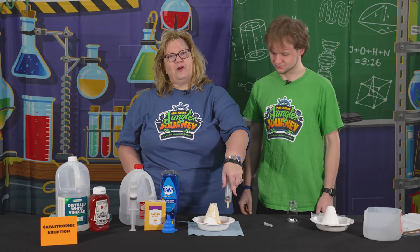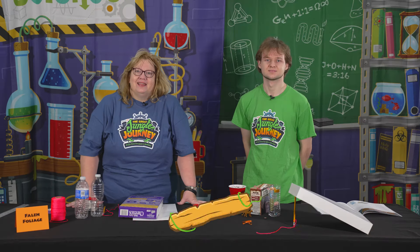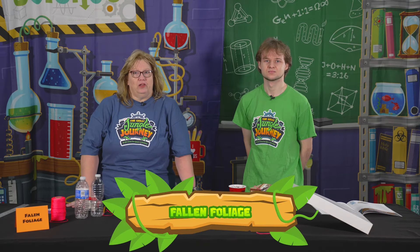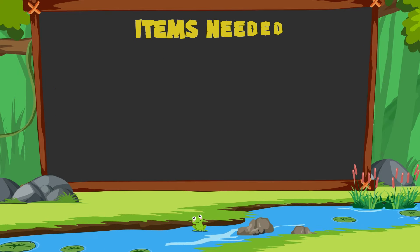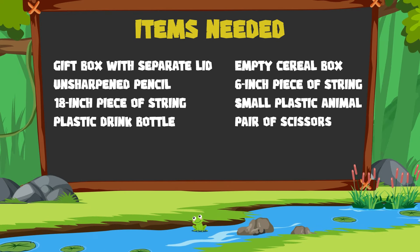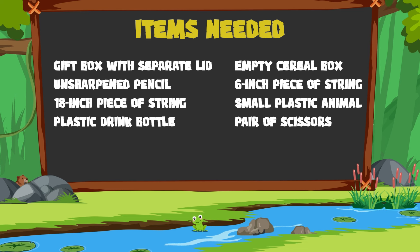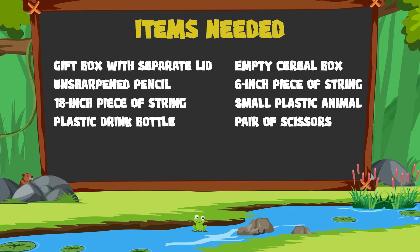That was Catastrophic Eruption. Now this next experiment is called Fallen Foliage. When sin entered the world, animals were no longer peaceful — they would trap and kill other animals, the same way sin can trap us in bondage. So we're going to make a few different types of traps and let the kids experiment.